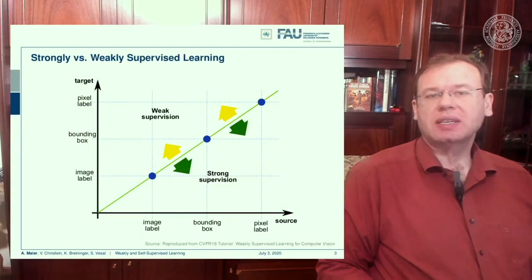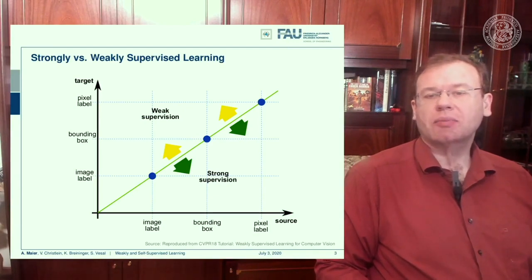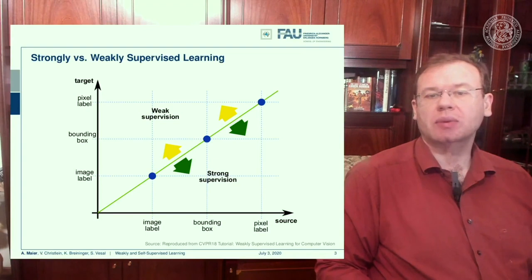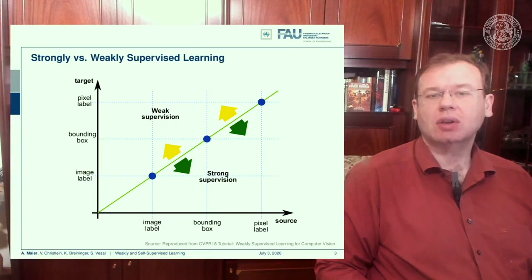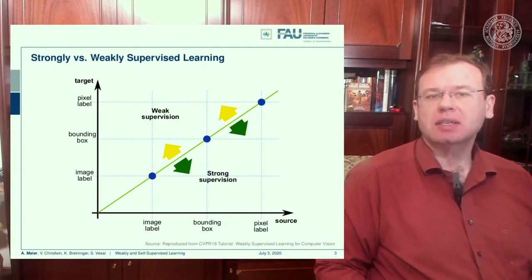The difference between weakly supervised and strongly supervised learning can be seen in a graph. With image labels you can classify and train — that's supervised learning. Training with bounding boxes to predict bounding boxes, and training with pixel labels to predict pixel labels, all of that is strong supervision. The idea of weakly supervised learning is to start with image labels and go to bounding boxes, or start with bounding boxes and try to predict pixel labels — using sparse, few annotations to create much more powerful predictors.